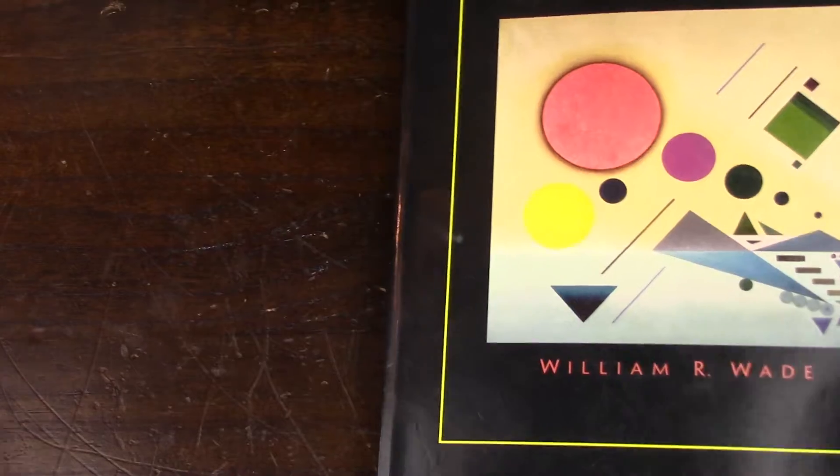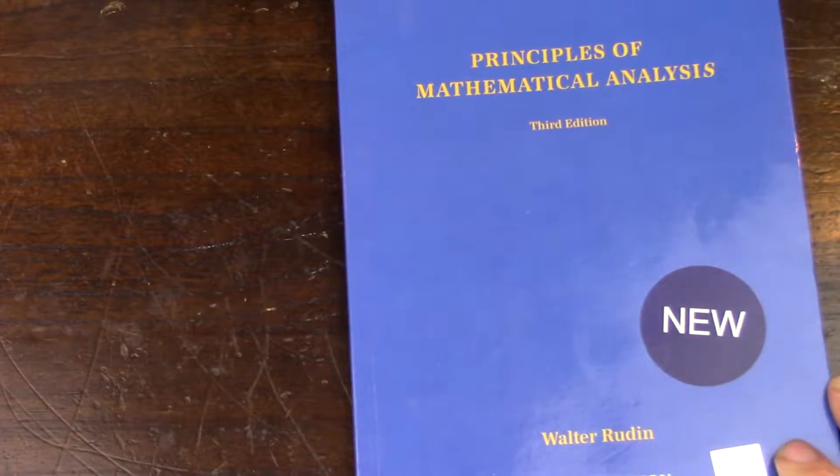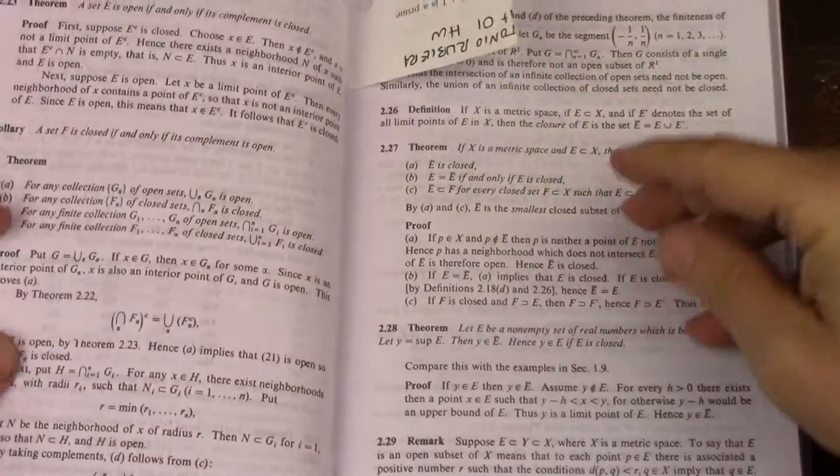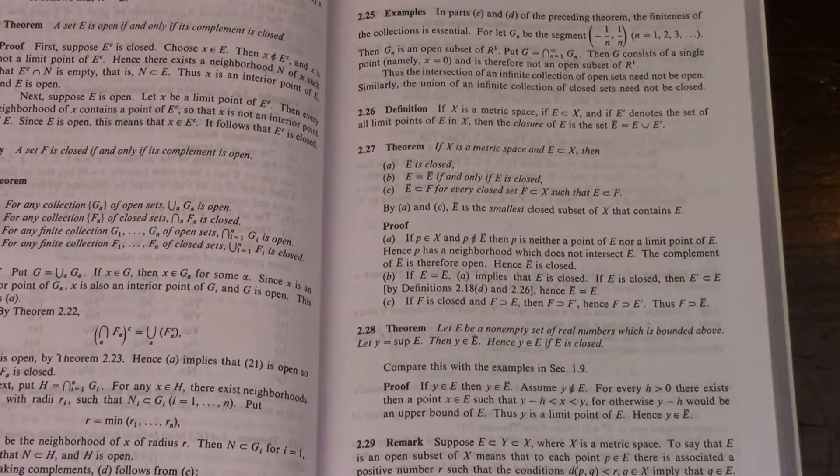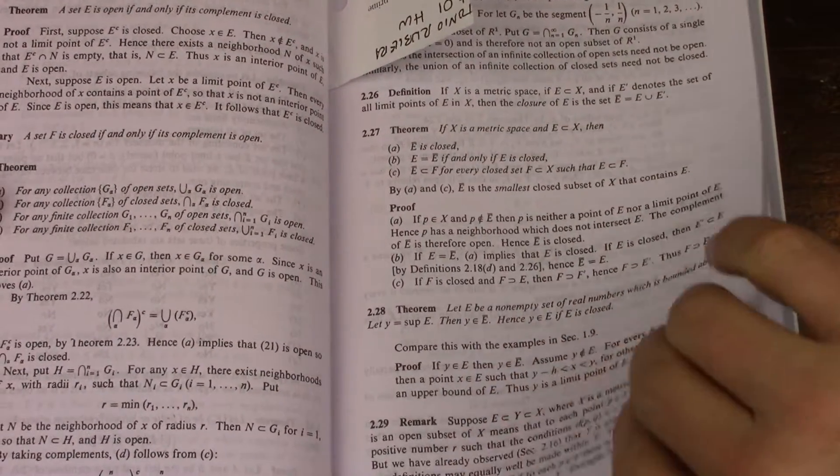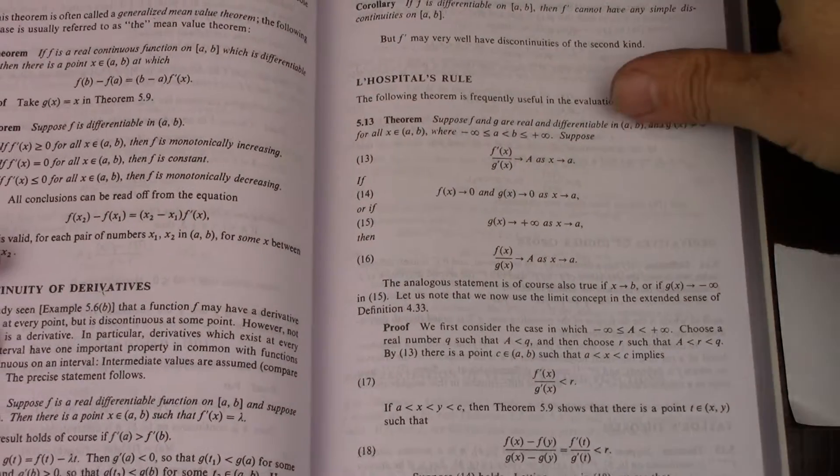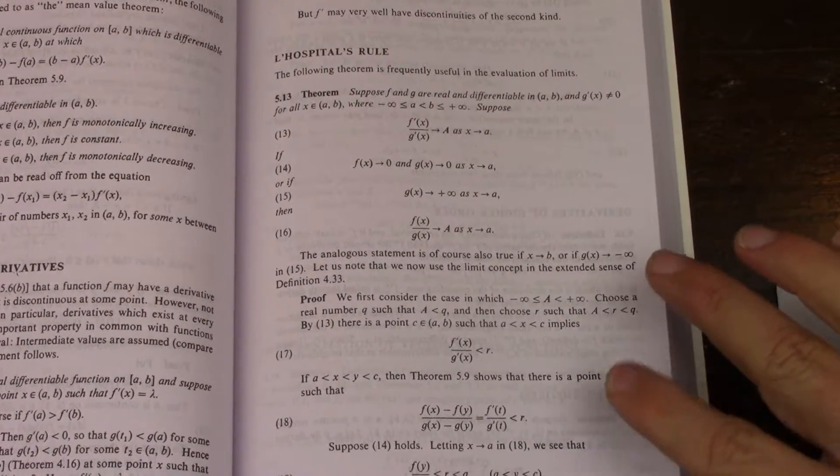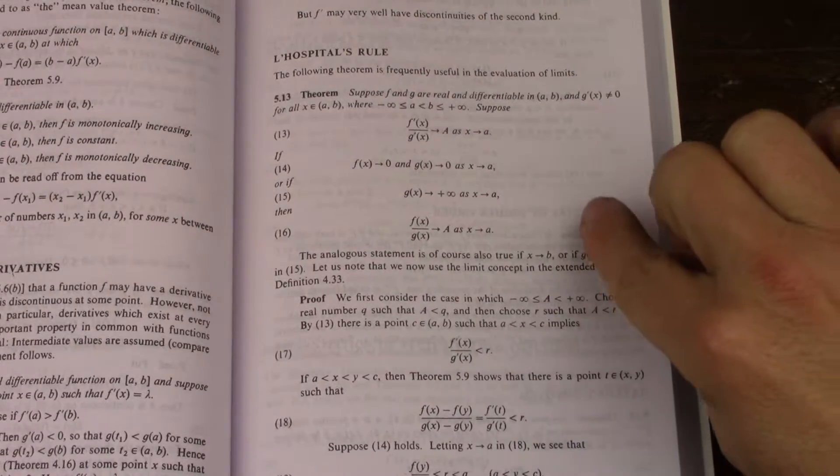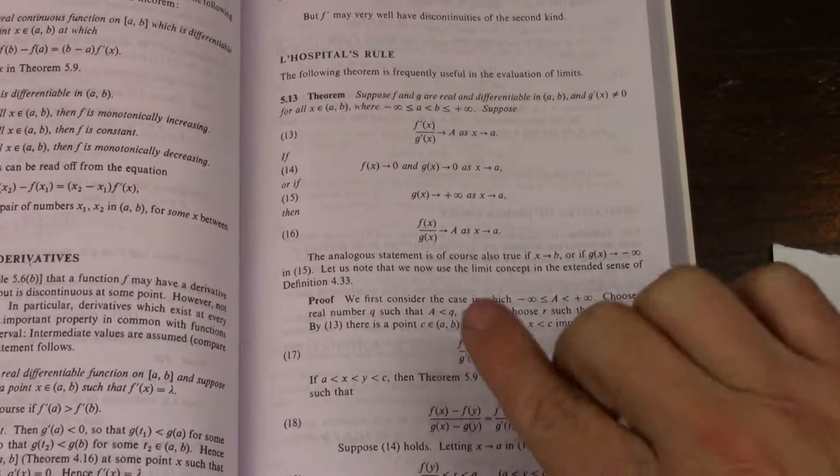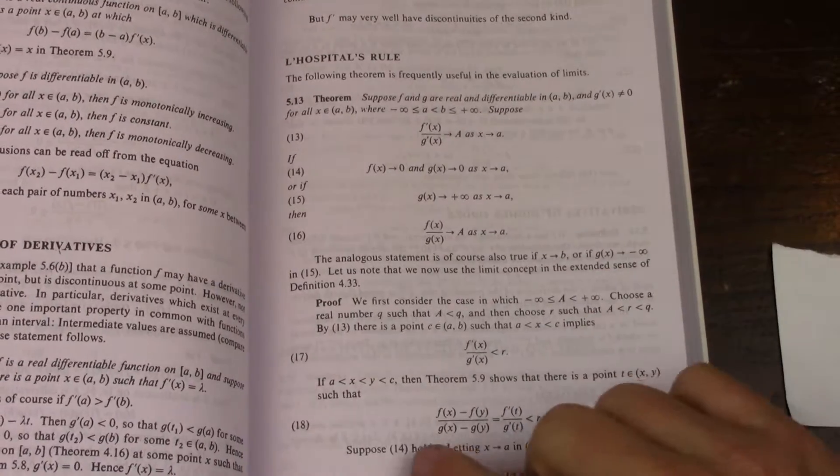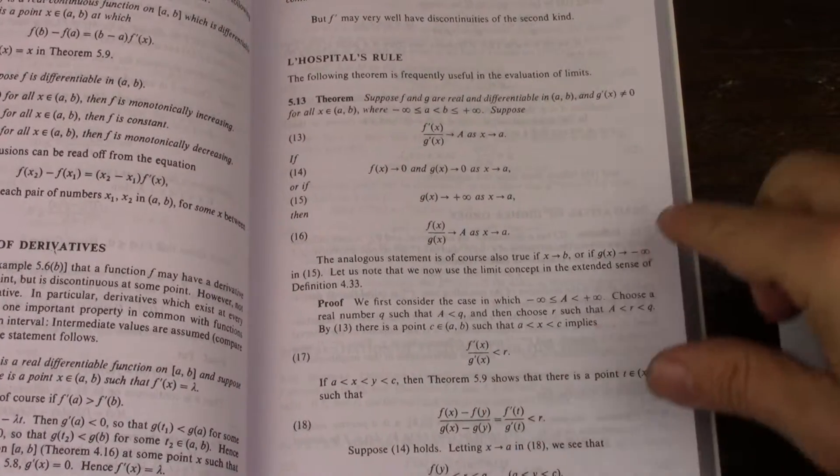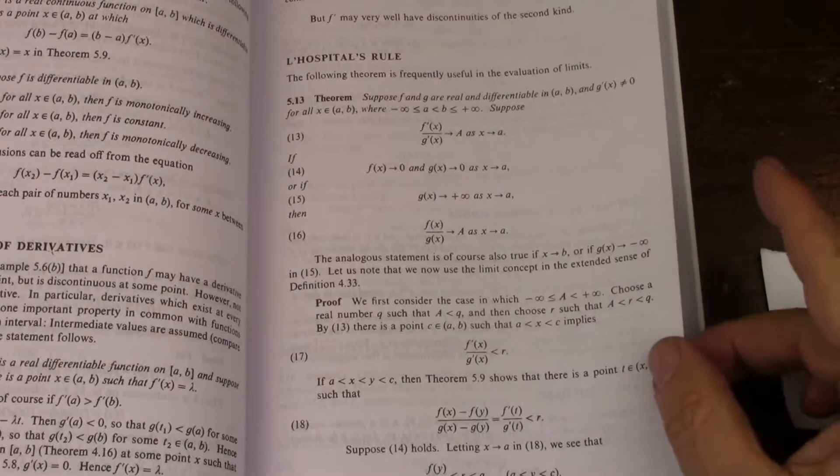Then you go to Rudin, and Rudin has a very similar proof to the one that Wade has. It's just really the same proof with different variables, simpler if you will, not as many, no indices, no subsequence indices, but also effectively the same proof.